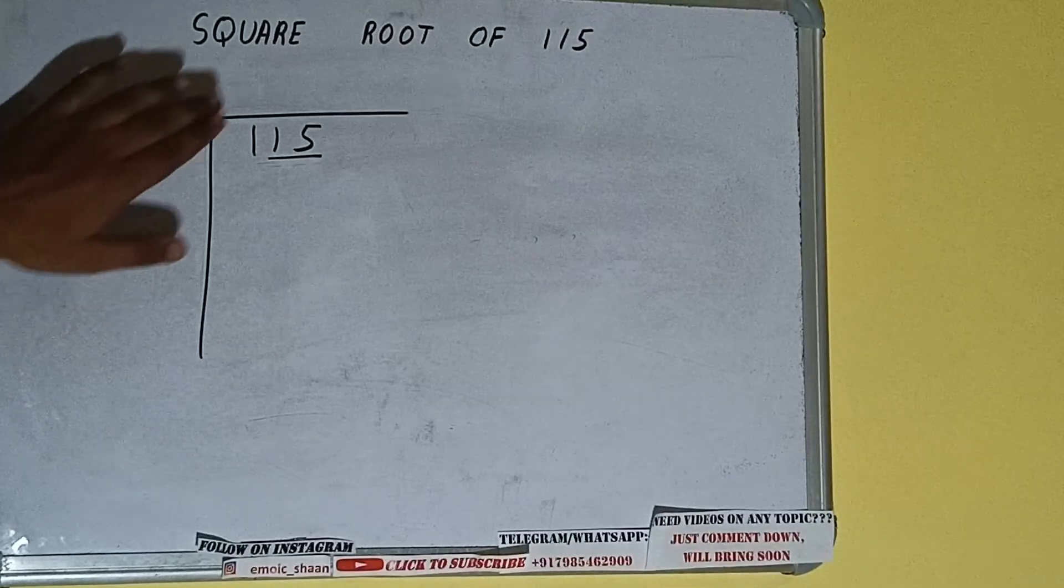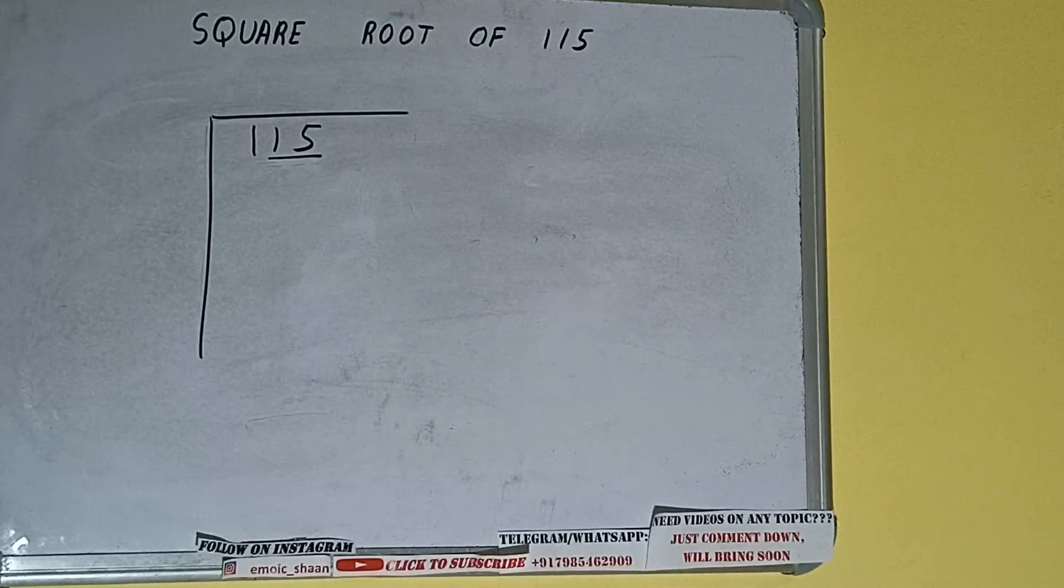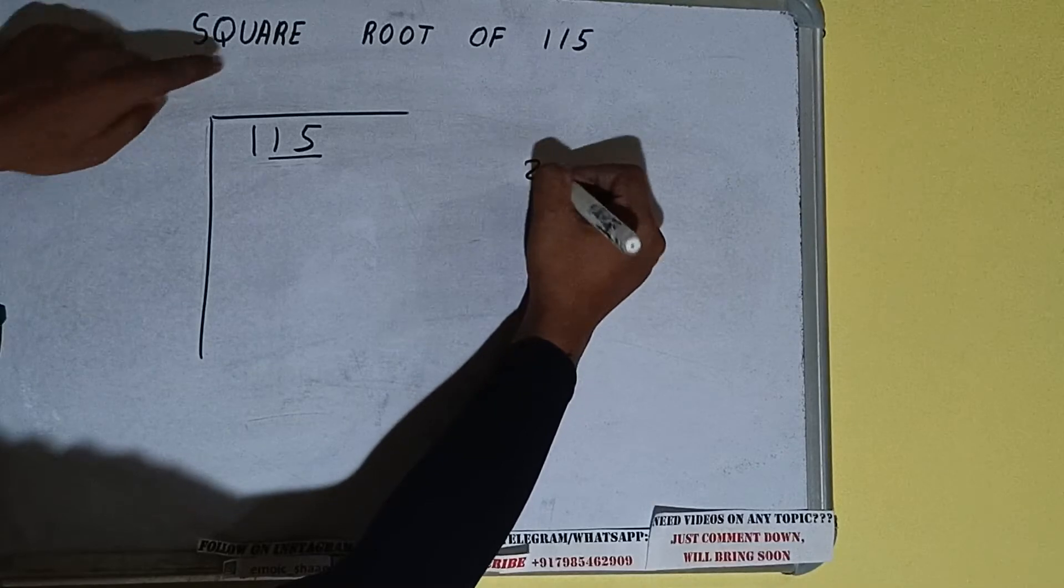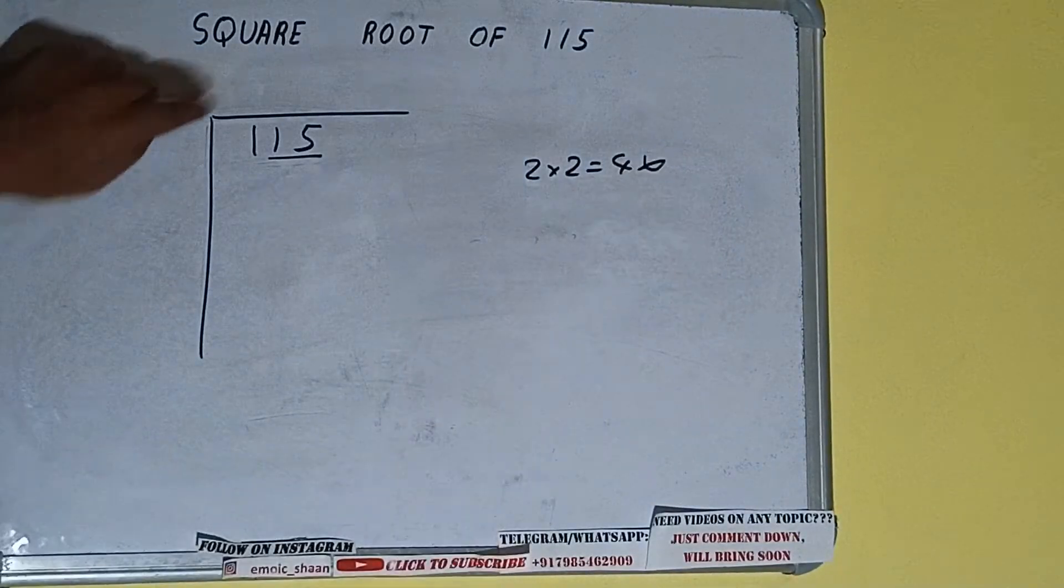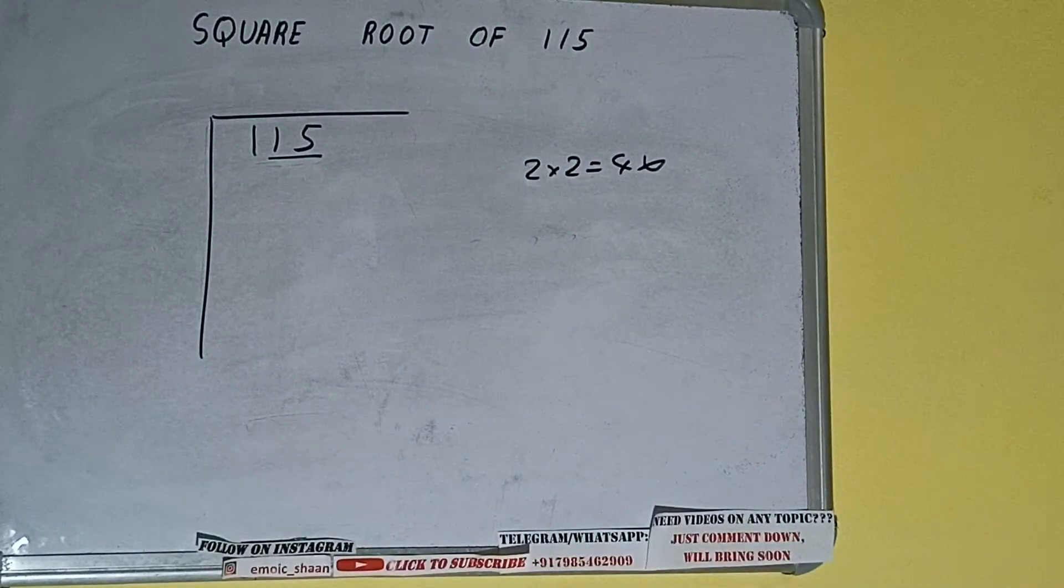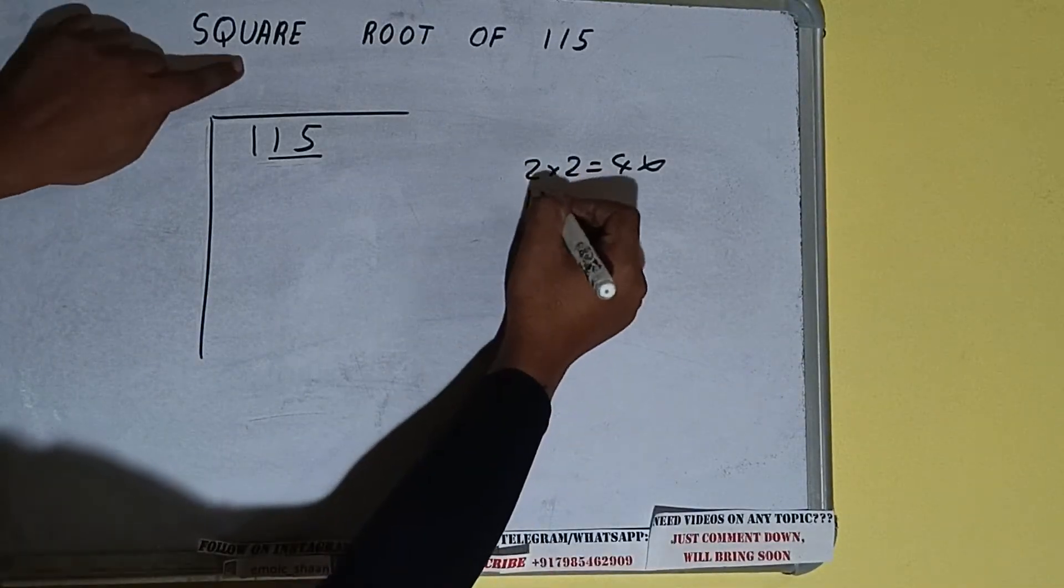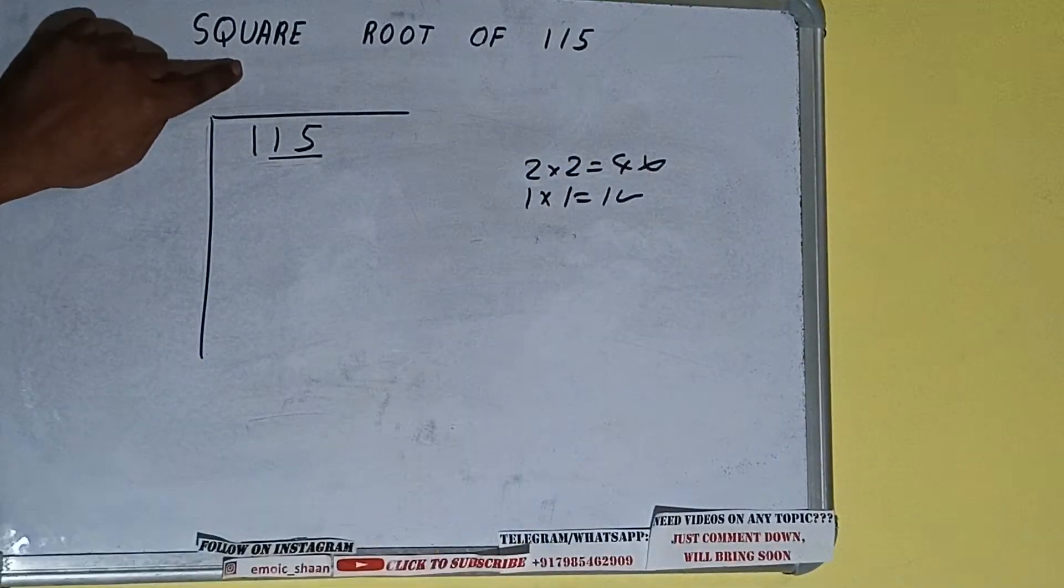The rule is whatever number we write here we have to write here also. So if we write 2 here and 2 here it will be 4 which is greater than 1, so we cannot take it. If we write 1 here and 1 here it will be 1 which is good to take.